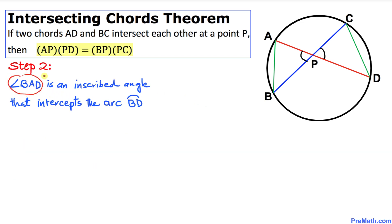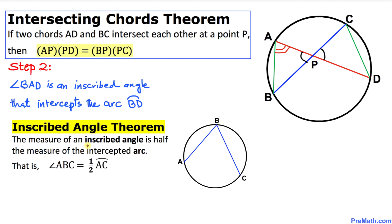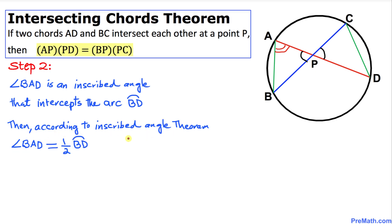Now let's focus on angle BAD. This is an inscribed angle that intercepts arc BD. By the inscribed angle theorem, the measure of an inscribed angle is half the measure of the intercepted arc. Therefore, angle BAD equals half of arc BD. We'll call this equation number 1.